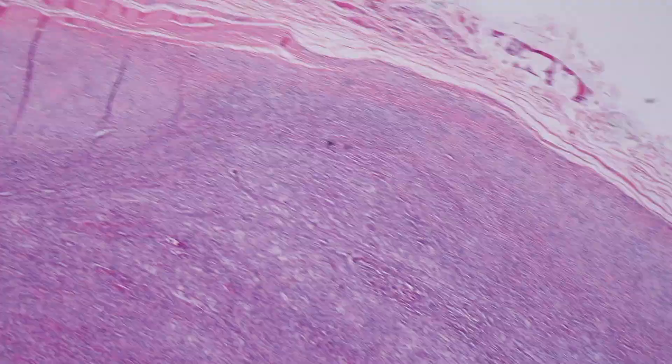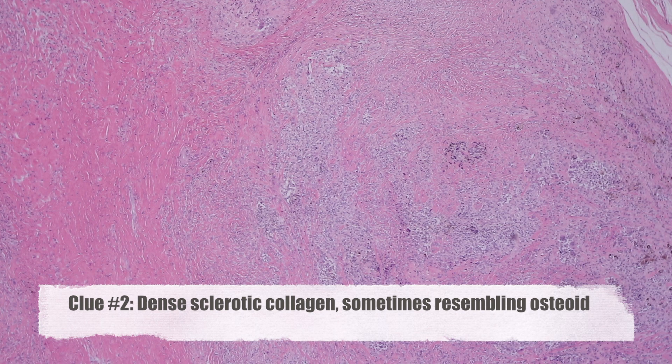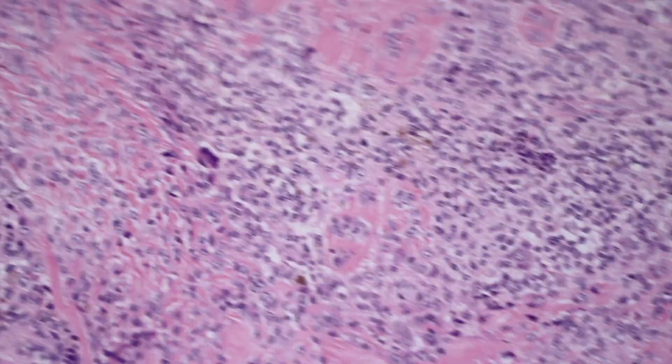You can see how beautifully circumscribed this particular example is, very smoothly circumscribed around the outside — that's a good feature for the localized form of tenosynovial giant cell tumor, giant cell tumor of tendon sheath. Another example shows a pale but very sclerotic background. One other finding in tenosynovial giant cell tumors is that the background collagen tends to be very dense and sclerotic, and sometimes it can even resemble osteoid. Finding the mononuclear cells embedded in this very sclerotic background is a really characteristic feature. Notice these mononuclear histiocytoid cells typically have open chromatin, punctate nucleoli, and abundant cytoplasm.